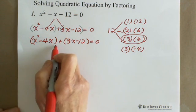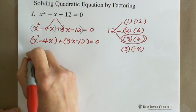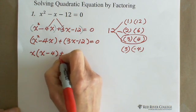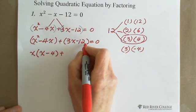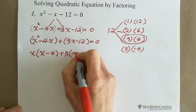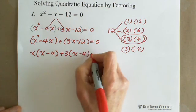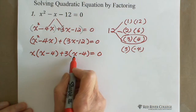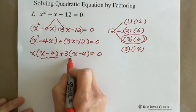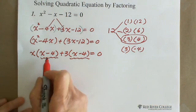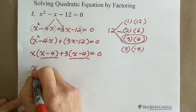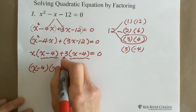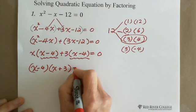We have x squared minus 4x plus 3x minus 12 equals 0. From the first group, x squared minus 4x, we pull out common factor x, giving x times (x minus 4). From the second group, we pull out 3 as common factor, giving 3 times (x minus 4). Now x minus 4 is the common factor, so we pull it out, leaving (x minus 4)(x plus 3) equals 0.